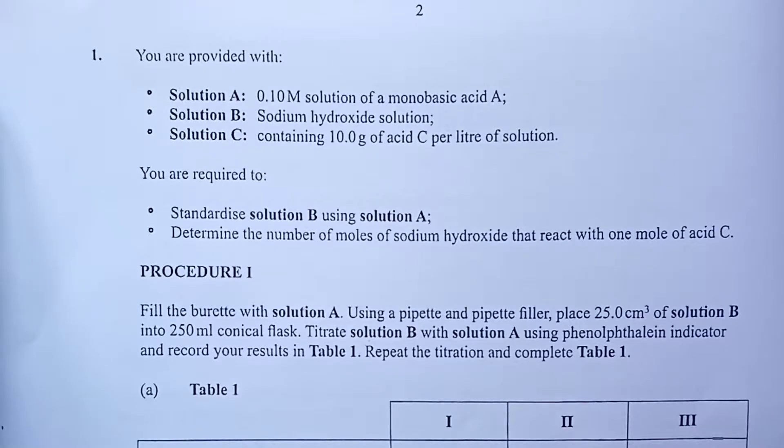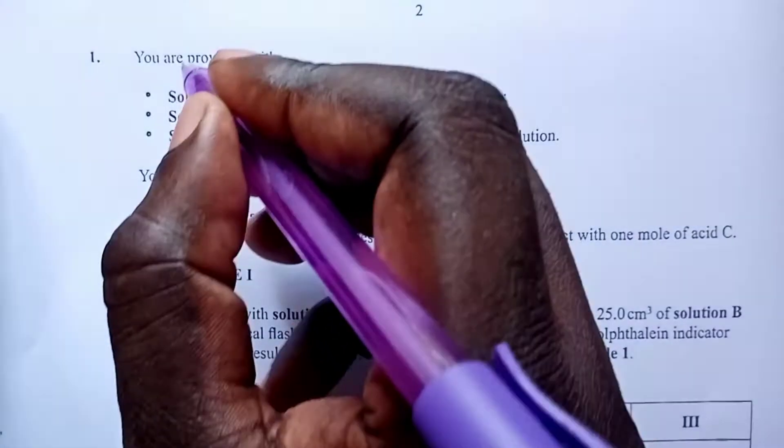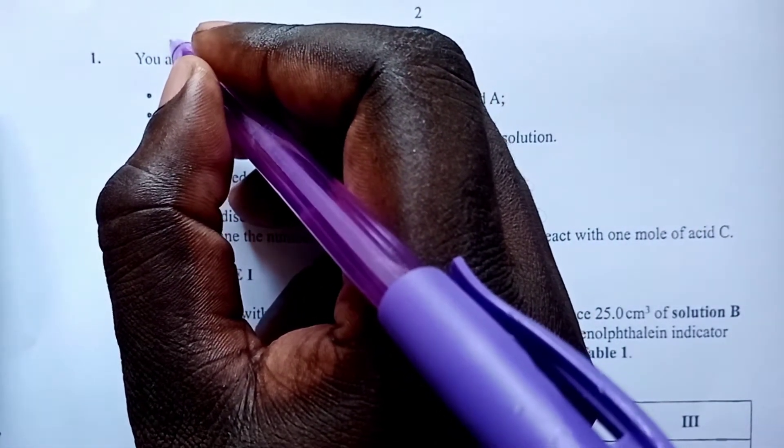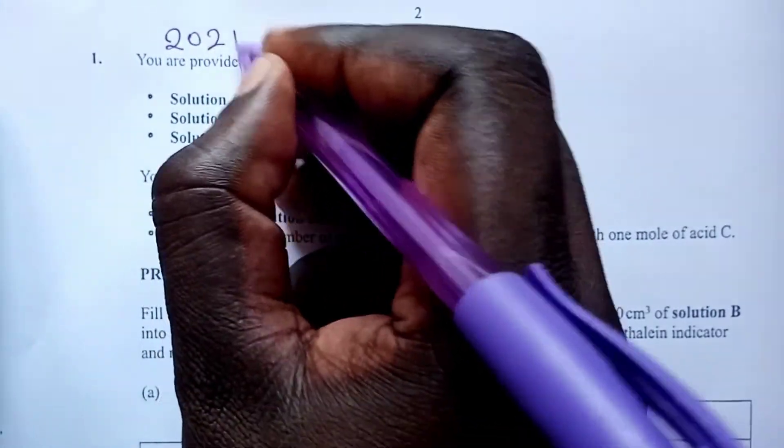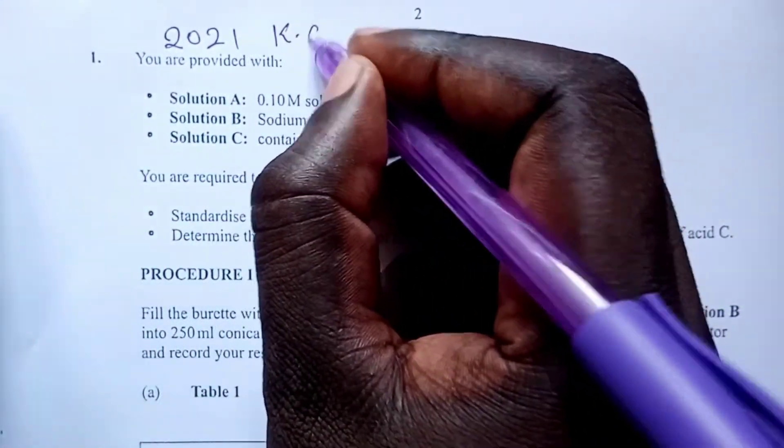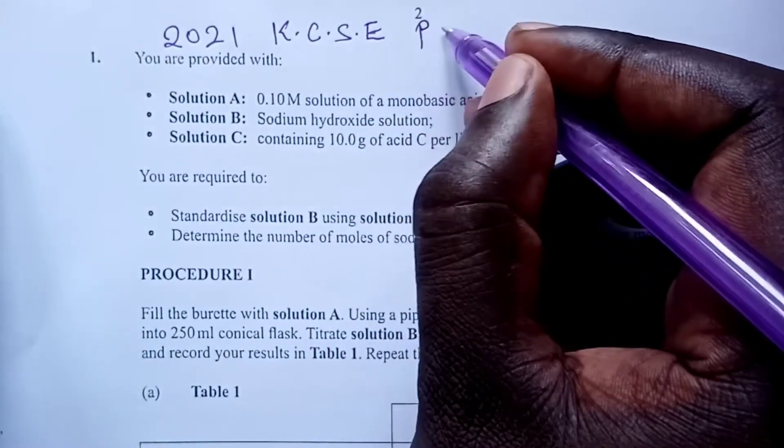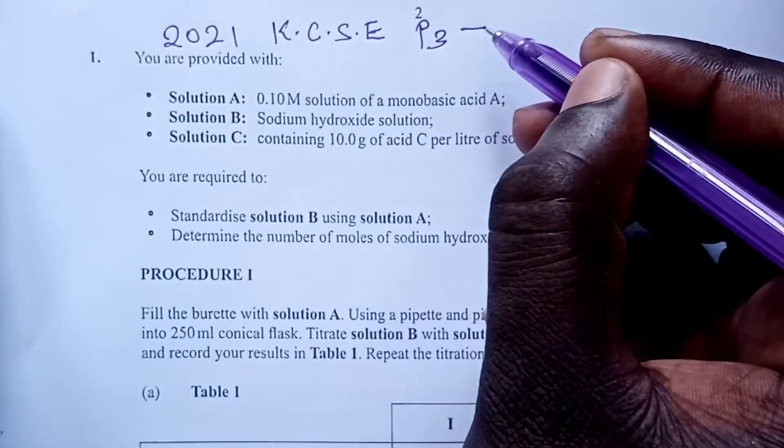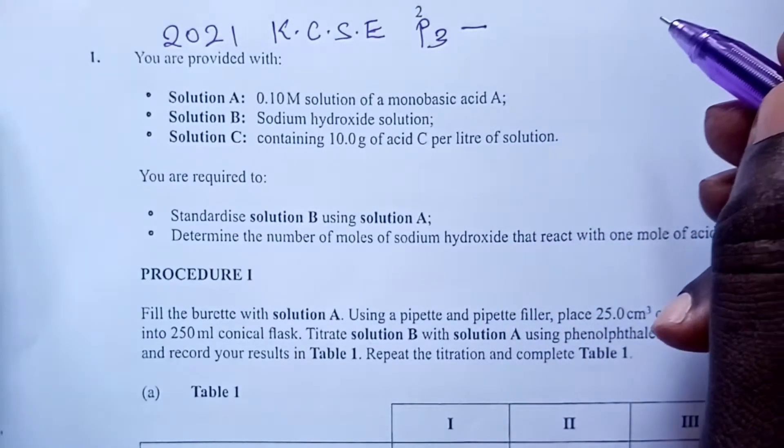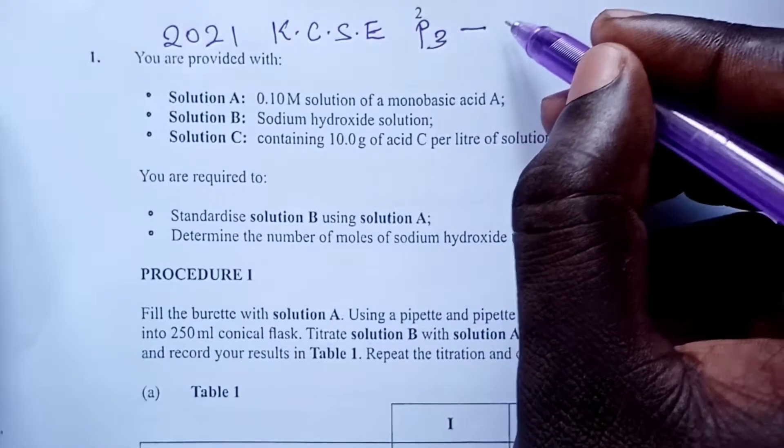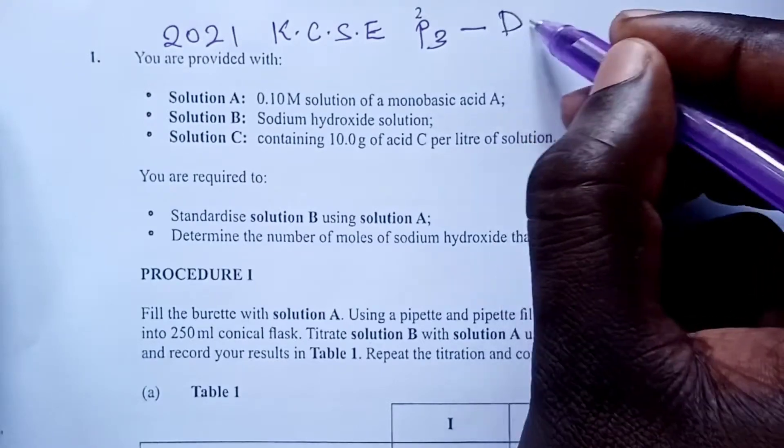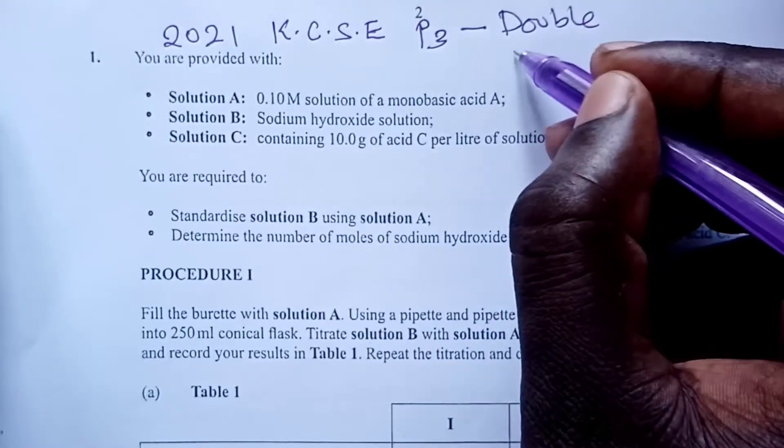Greetings once again from us and welcome. We have the pleasure to present 2021 KCSE Chemistry Paper 3. This year, question 1 tested what we call double titration.